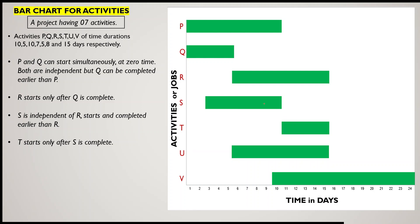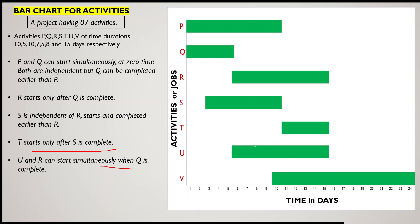Activity T starts after the completion of S — they are dependent on each other. If S gets delayed, then T's starting time will definitely be delayed. R and S are independent of each other. Activity U and activity R start at the same time; their starting day is the same and their completing day is also the same, so U and R can start simultaneously.